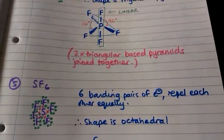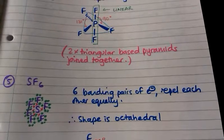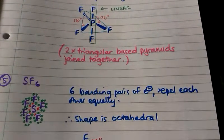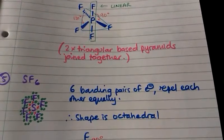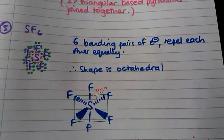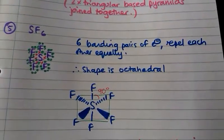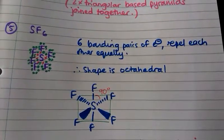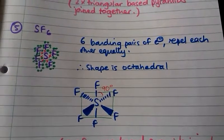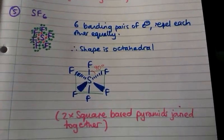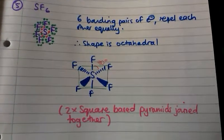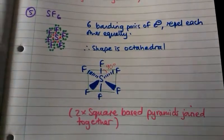Last example: SF₆. There are six bonding pairs of electrons that are all repelling each other equally, so the shape of this molecule is octahedral where the bond angle is 90 degrees. For this one, imagine two square-based pyramids joined together at the base.